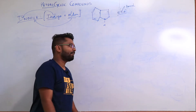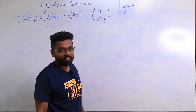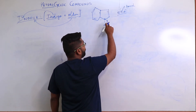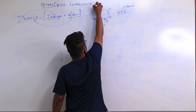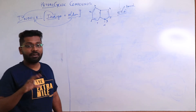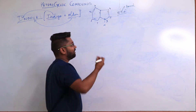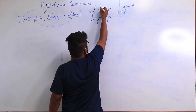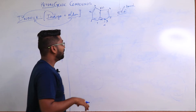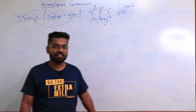Let me give the numbering scheme of the indole molecule. Numbering begins from the heteroatom, that is nitrogen — this is position 1, then 2, 3, 4, 5, 6, and 7. The two bridgehead positions are not numbered in the main sequence because reactivity is very less at these positions; however, they are named as 3a and 7a. That is how the numbering of indole takes place.